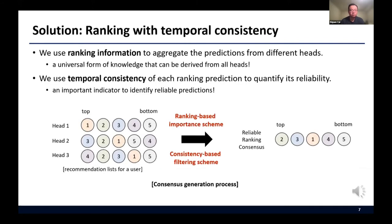As a solution to the challenges, we devise a new strategy that generates informative consensus from different heads. Our key idea is utilizing the ranking information with temporal consistency. The ranking information is a universal form of knowledge that can be derived from all heads. As shown in the left figure, the score predictions from each head are converted as a ranking permutation of items, so that we can consolidate the predictions in a unified view.